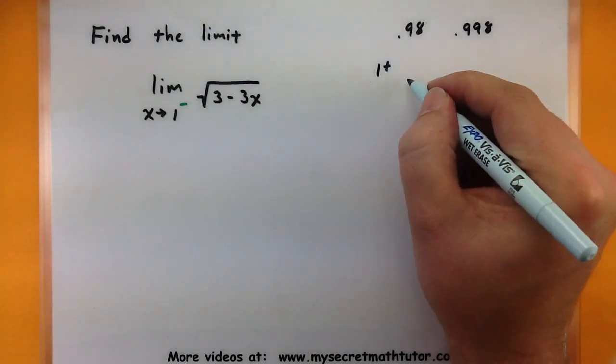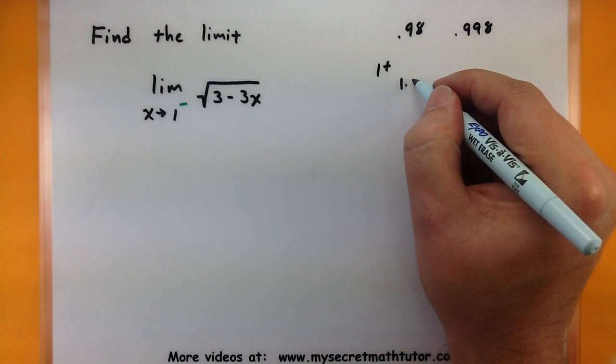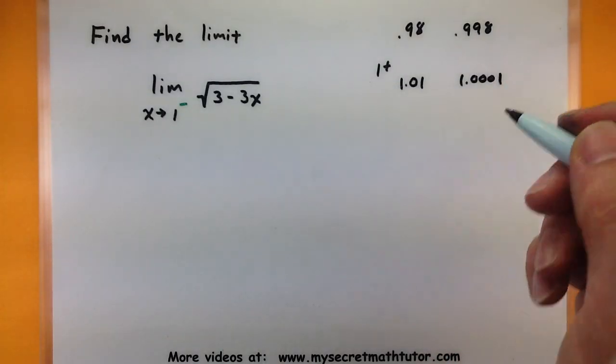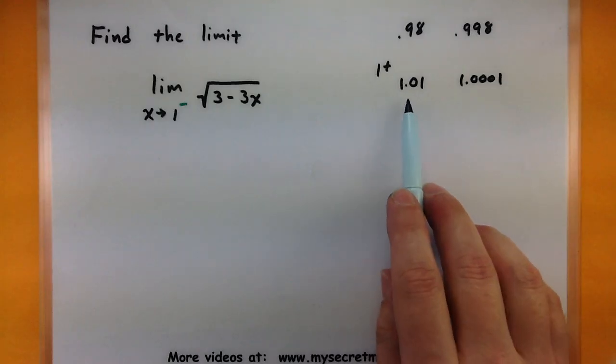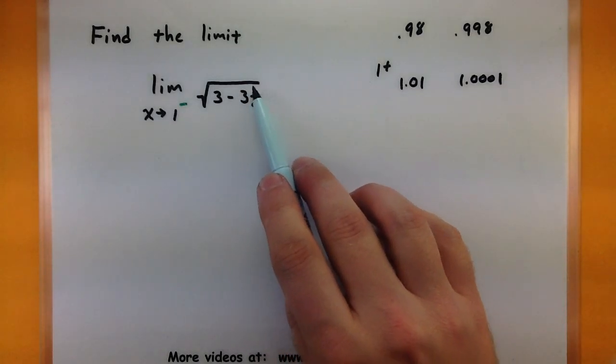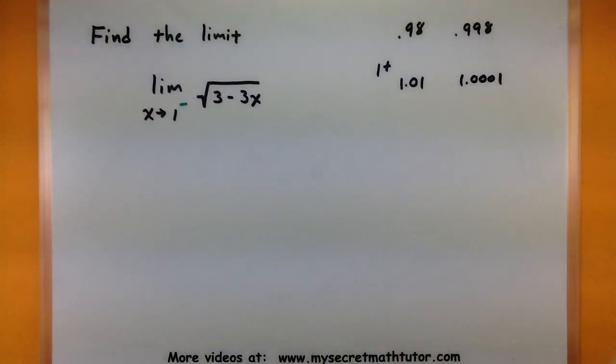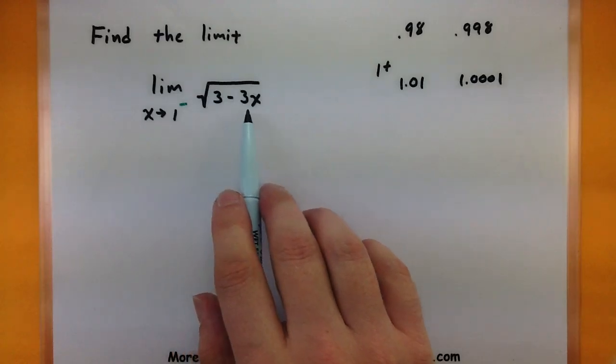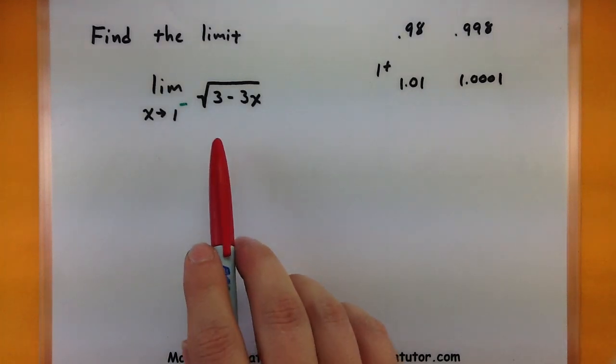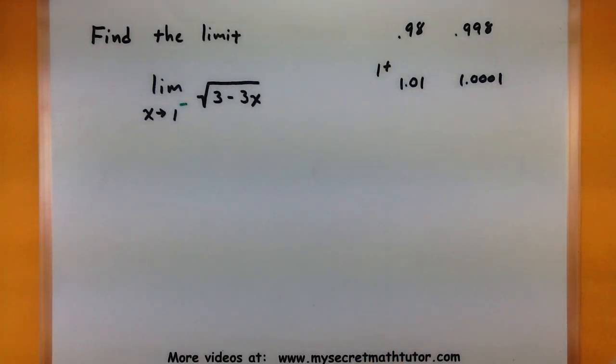So what would be on the right side of 1? Maybe like 1.01 would be on the right side, 1.0001 would be on the right side. If you try putting these values in for your x, then what you'll end up subtracting will be larger than 3. So you'll have 3 minus something larger, and you'll actually end up with imaginary values. So this particular function is only defined for values that are approaching 1 from the left side. There's actually nothing on the right side of that 1.